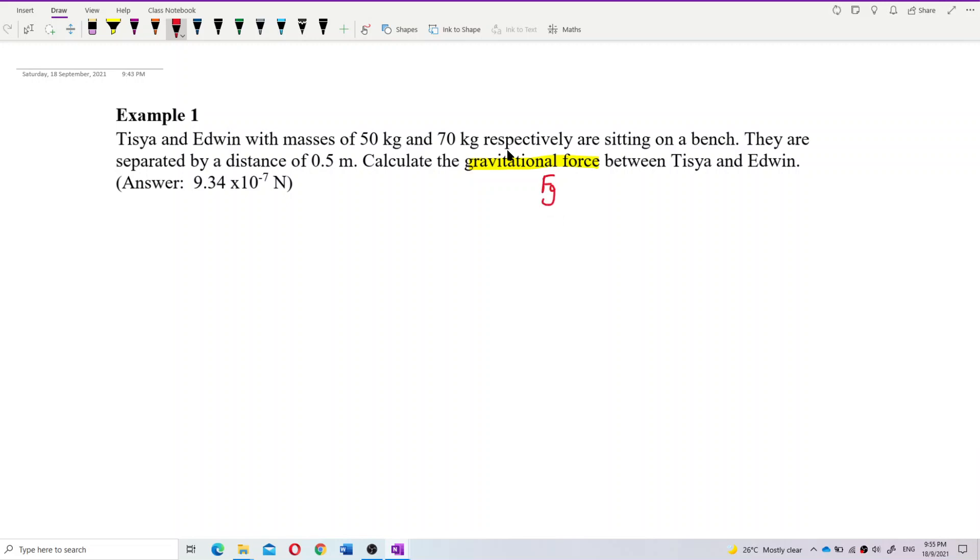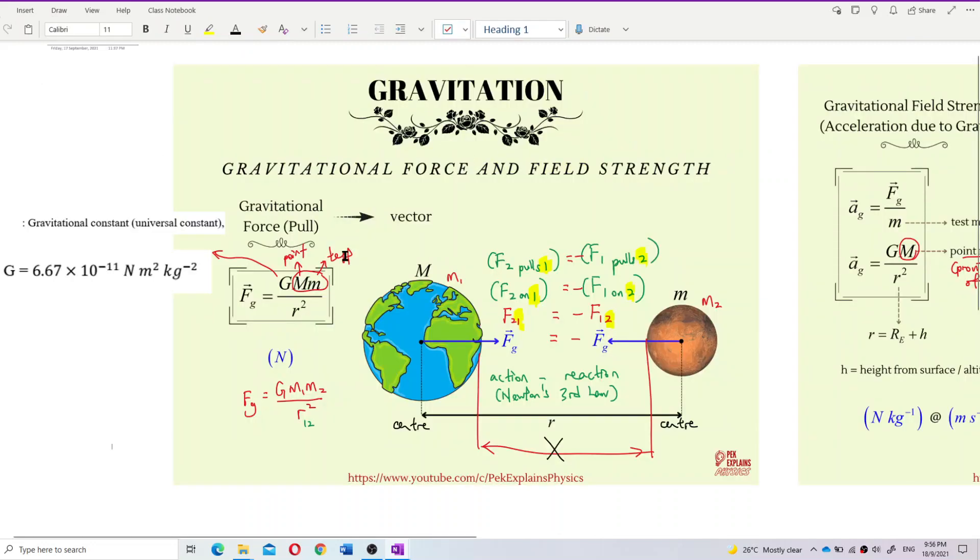What is the formula for gravitational force for the two masses? We can assume this one as mass 1, this one as mass 2, and the distance between them is the R. According to the gravitational force formula, FG equal to G M1 M2 over R square.